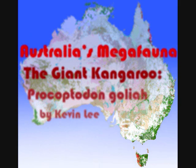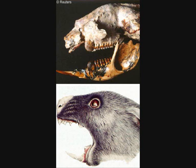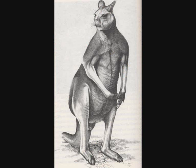In the Pleistocene epoch, megafauna reigned supreme. Many strange, curious animals existed then, like the zagoglossus and the notorious killer kangaroo, but one stood out from them all: the giant short-faced kangaroo, Procoptodon goliah.